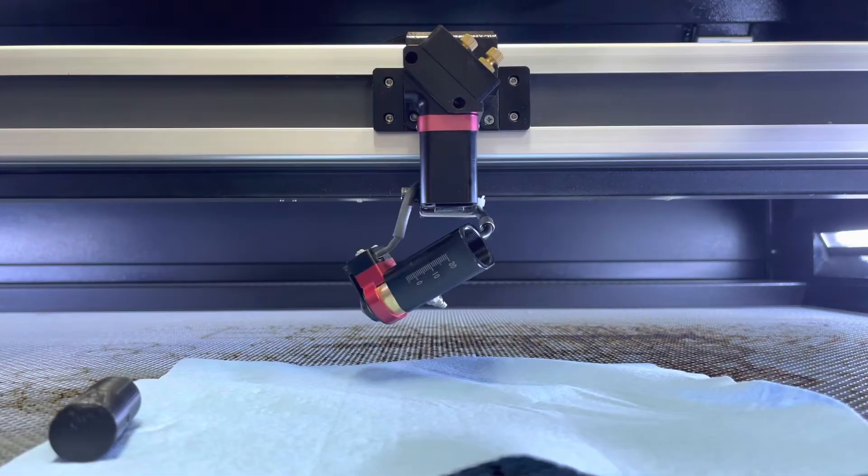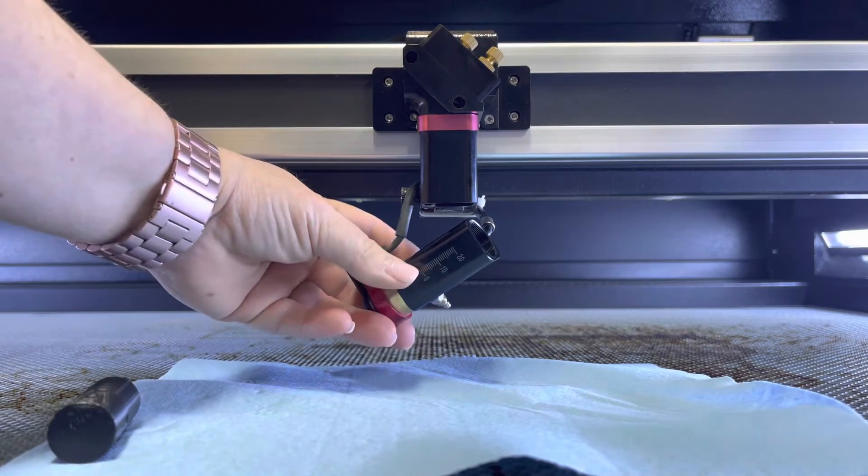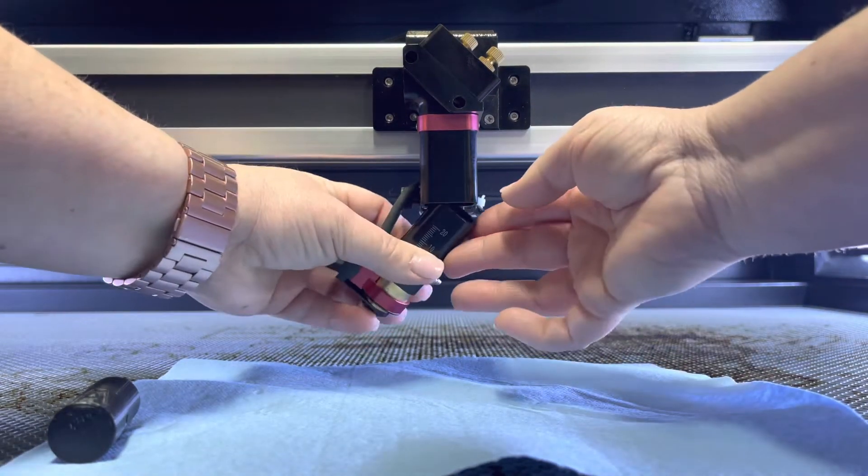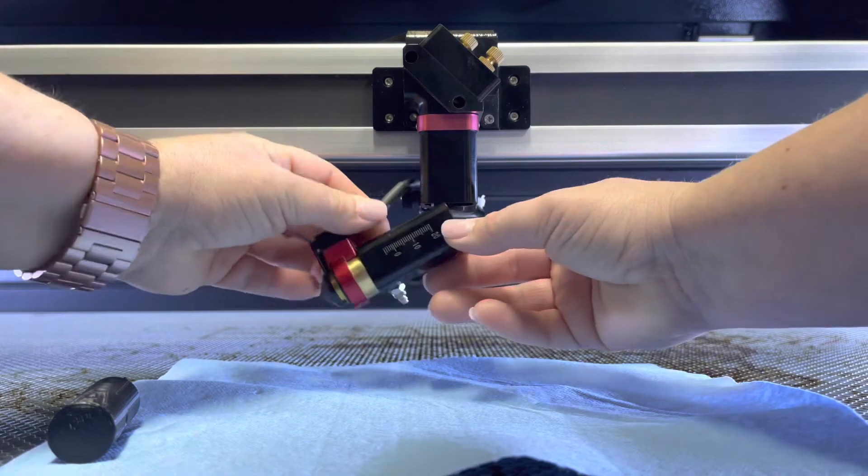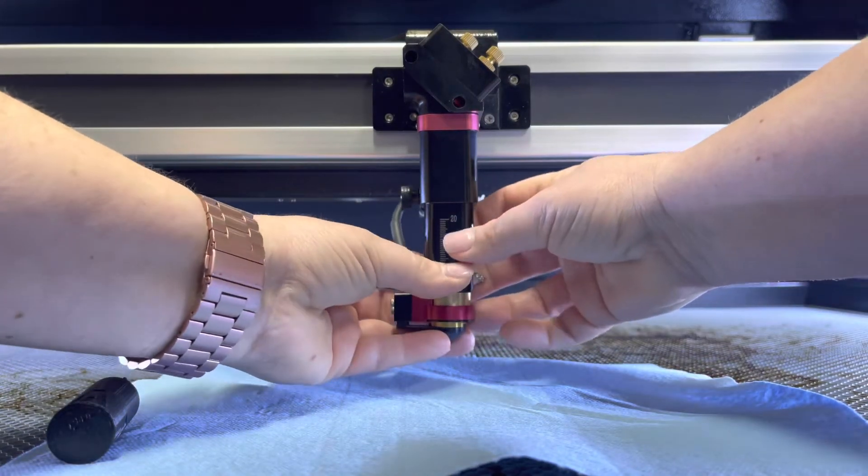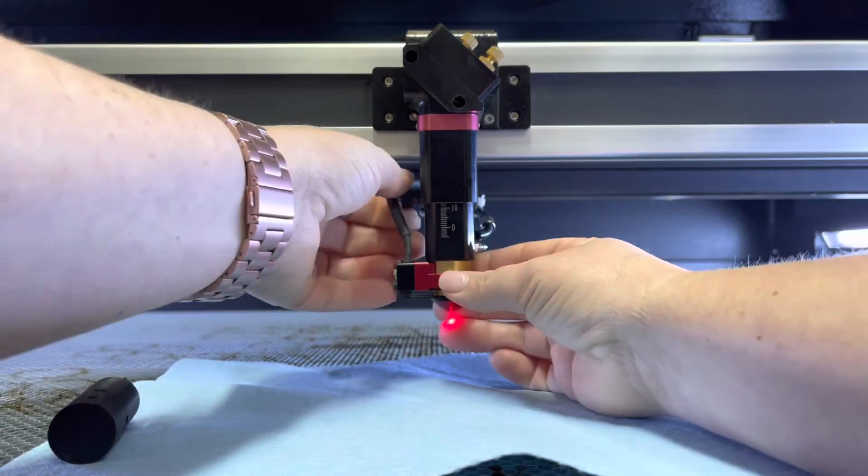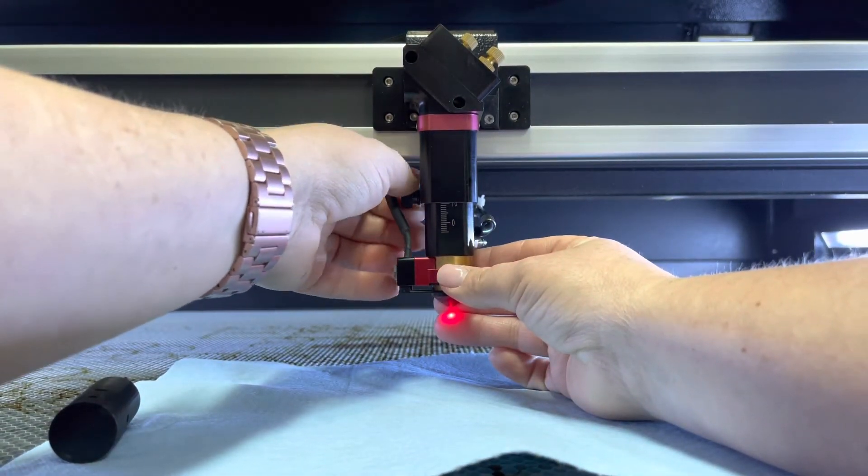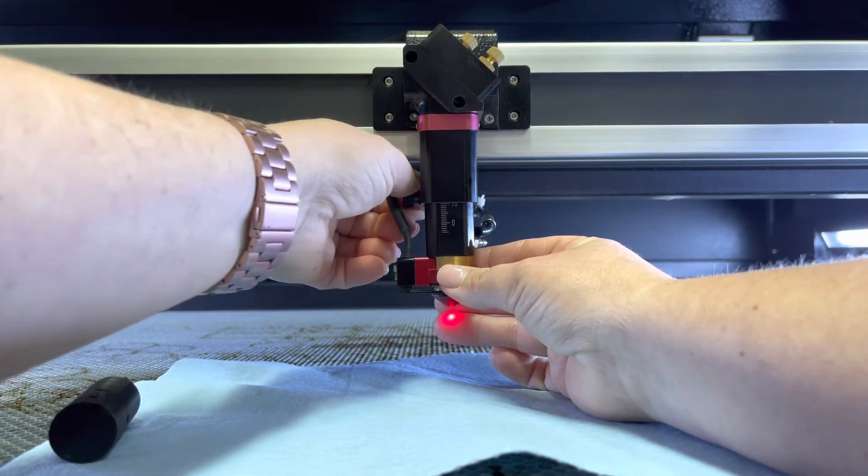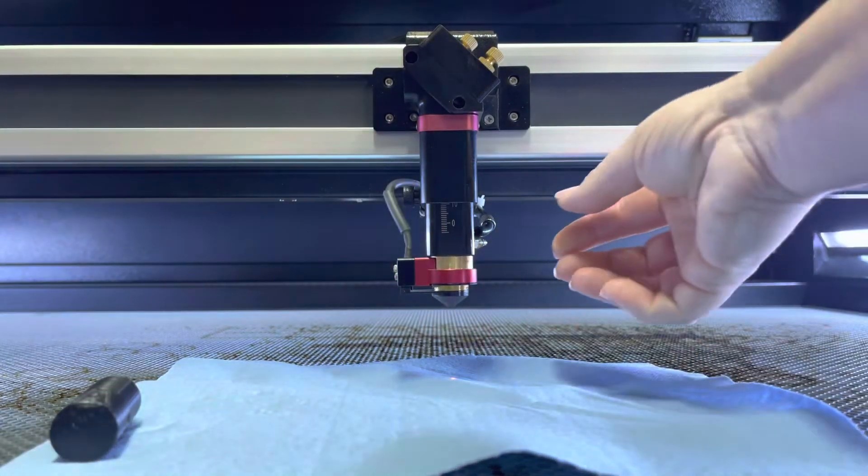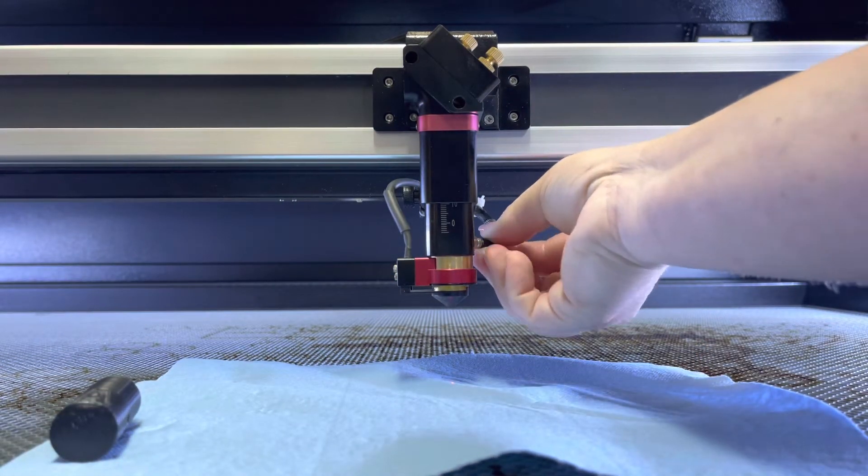All right, now we are ready to put it back together. It is going to go back together just like we undid it. You've got to put this in, and I have mine set to 10. I do not have a four-inch lens in there; I have a two and a half inch lens, so mine is going to be set at 10. I'm going to tighten it here and make sure it's set at 10.